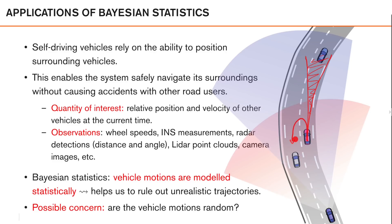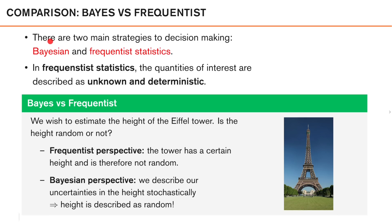One possible concern is whether a vehicle's motions actually are random, and this underlines the basic Bayesian assumptions. For completeness, we should mention that there are two main strategies to decision making: using Bayesian statistics, which we will focus on in this course, and using frequentist statistics. The main differences between these two are mainly on a philosophical level, but which also have consequences on the actual calculations made and the models used. In frequentist statistics, the quantities of interest are described as unknown and deterministic, and not unknown and stochastic or random as in Bayesian statistics.